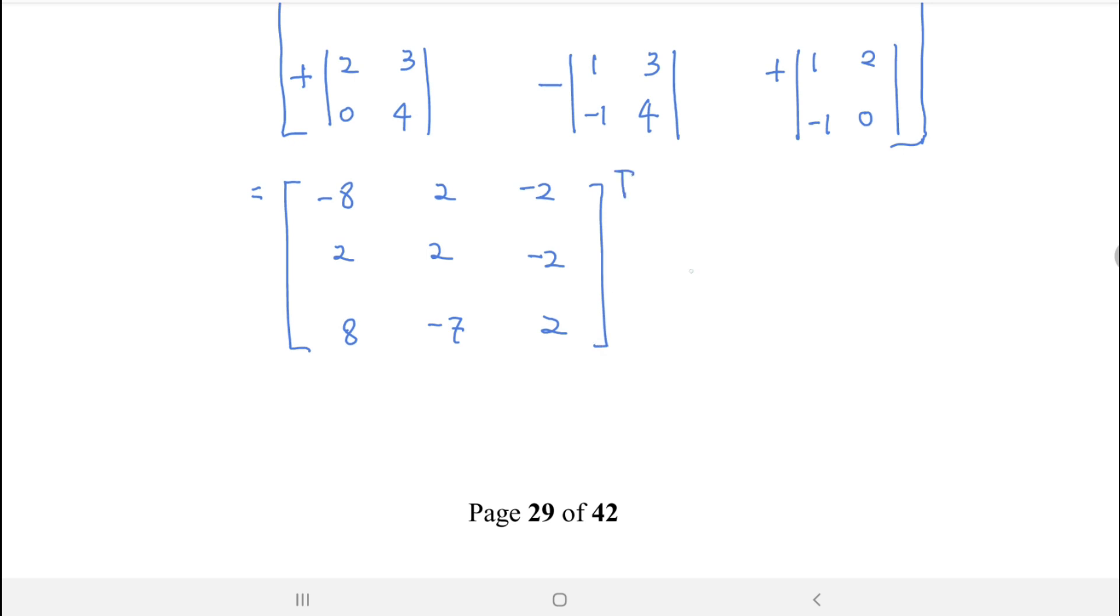So the transpose of matrix A is: negative 8, 2, 8; 2, 2, negative 7; and negative 2, negative 2, 2.